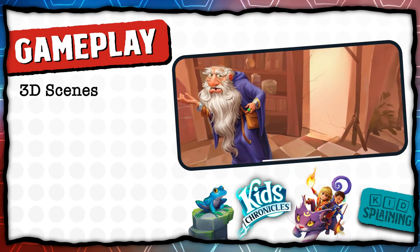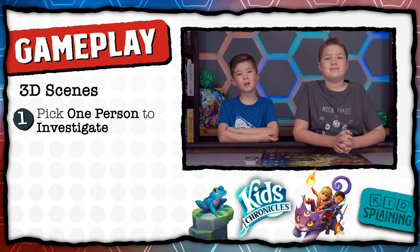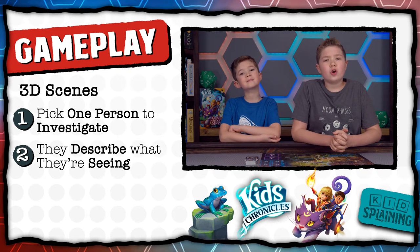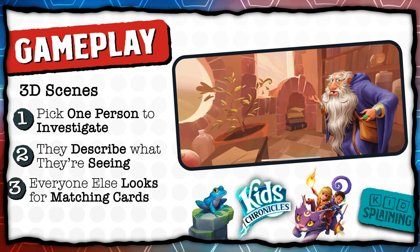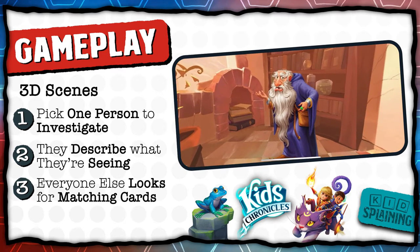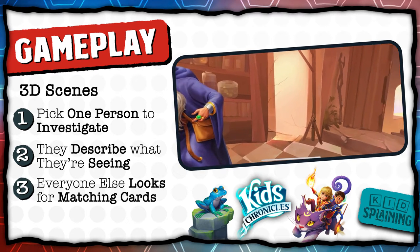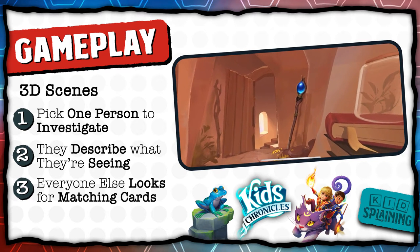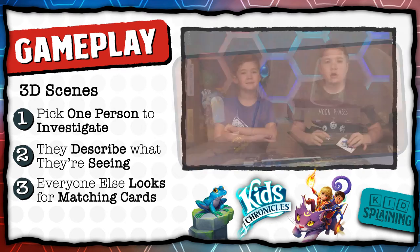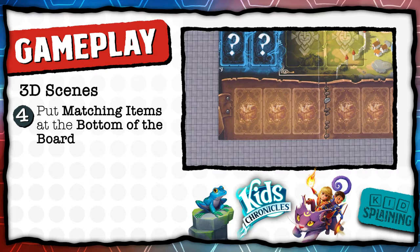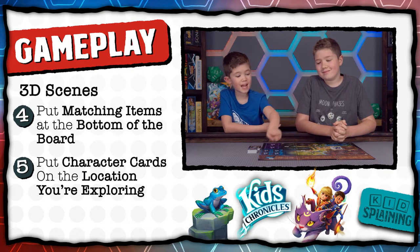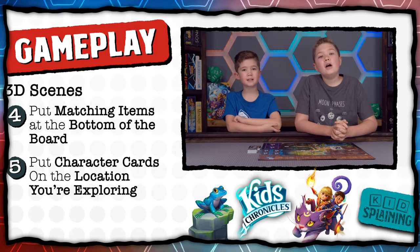Anytime the app takes you into a scene, pick one person to investigate. They'll have 20 seconds to look around by either swiping or moving the device, and while they're looking around, they're going to describe what they see to the other players. We'll be looking through the character and item cards to find what's being described. So in this scene, we see an old man with a blue robe and a staff with a blue crystal on the top. If you run out of time, you can press the look again button to take another look. We found these cards matching what was in the scene, so we'll put the item card in one of the spots at the bottom of the board, and we'll put the character card in the location that we were exploring, which was Merlin's Tower.